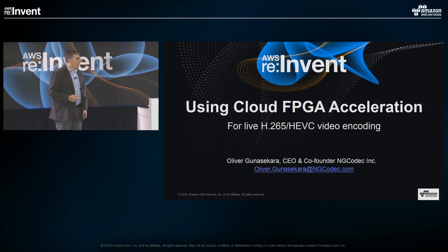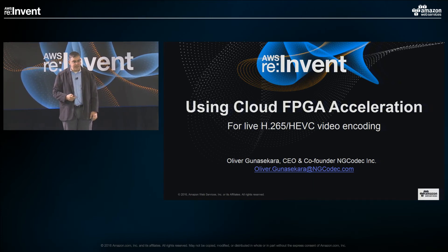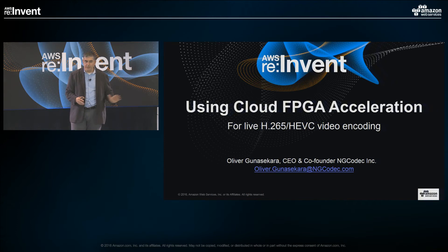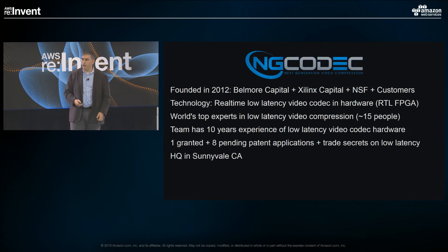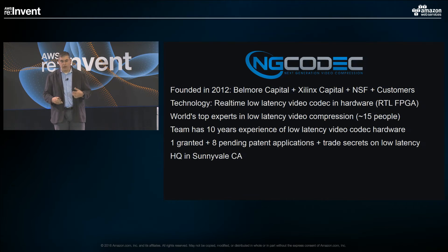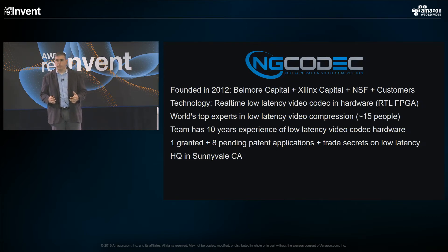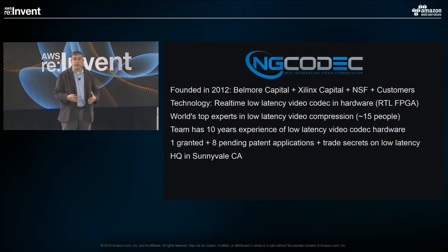It's super exciting to be here — thank you to Amazon for this opportunity. Our team has been working extremely hard to bring together FPGAs and the cloud, and I'm really excited to attempt a live demo of an F1 instance in a few minutes. Let me give you a little background on our company. We're a startup of about 15 people, founded about four years ago primarily from a small super angel and Xilinx — the company that makes the FPGAs, the market leader, whose chips Amazon has deployed on the F1 instance. Our technology is around low-latency video encoding, specifically H.265, which can halve the bit rate for the same quality as H.264.